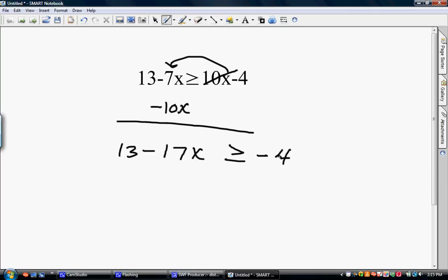With this problem now, I want to get my numbers on the other side, so I'm going to bring this 13 across the equal sign. It was a plus 13, so when I move it to the other side, it becomes a negative 13.